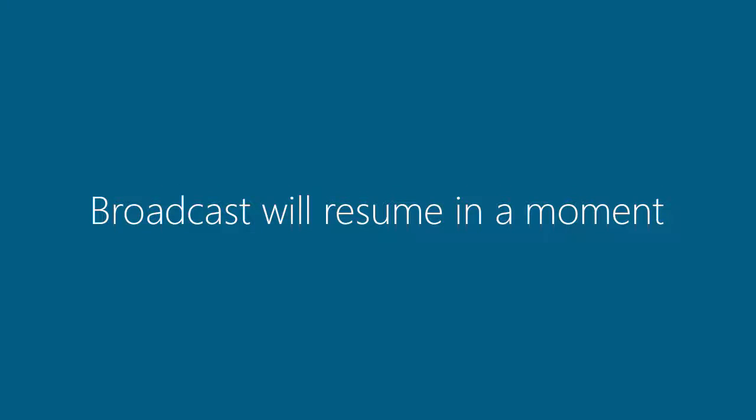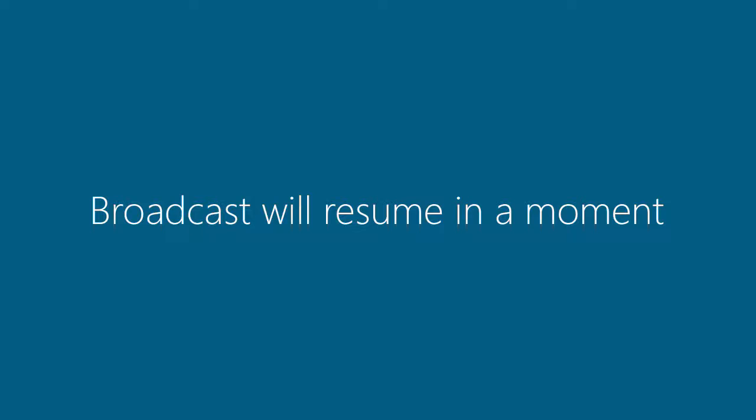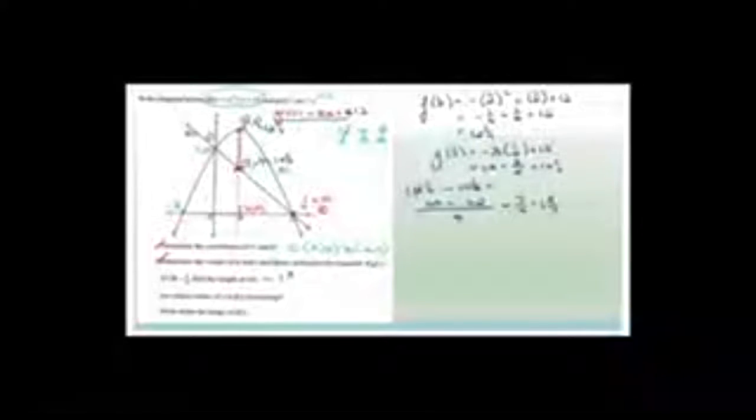So then all we need to do is find the difference between the two: 12 and a quarter minus 10 and a half. Over a common denominator of 4: that is 49 over 4 minus 42 over 4, which is 7 over 4, which is 1 and 3 quarters. So the length of AE is 1 and 3 quarters.